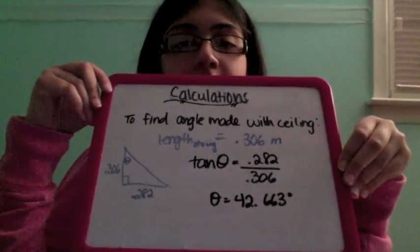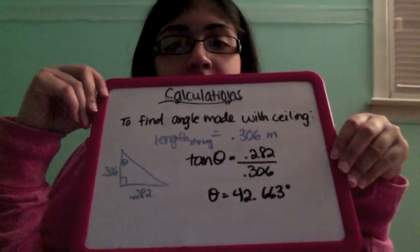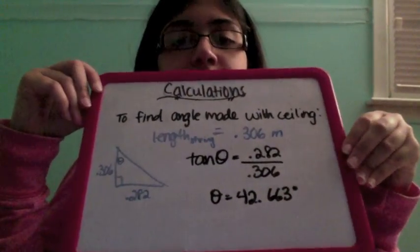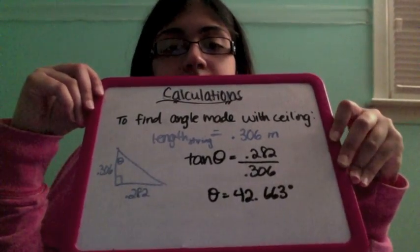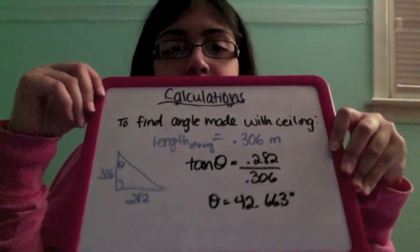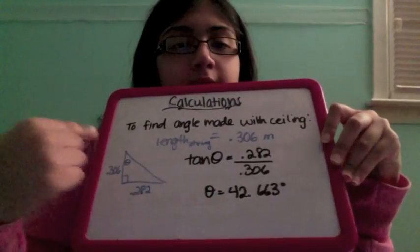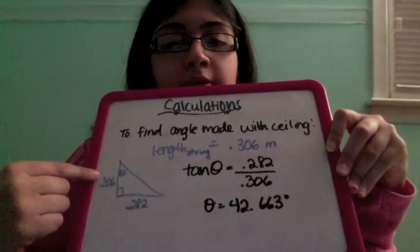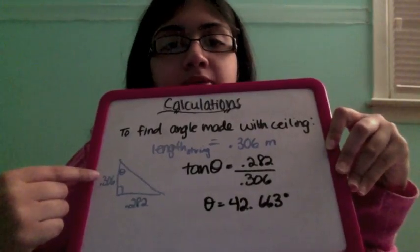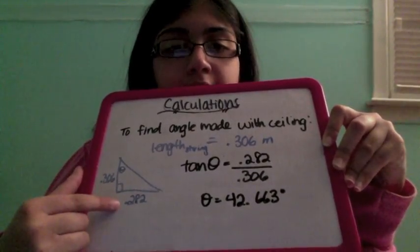Finally, we found the angle that the pig made with the ceiling. We found that the length of the string that the pig was hanging from is 0.306 meters, and we put that over here. We also know that the radius is 0.282 meters, so that went here in our diagram.